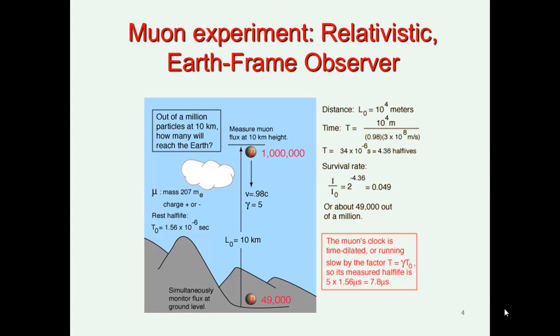And I'm saying, in a non-relativistic way, about 0.3 out of every million muon particles should reach planet Earth. Now, what actually happens if we have a relativistic Earth frame observer? So this is what happens when observed or measured from an observer on planet Earth.